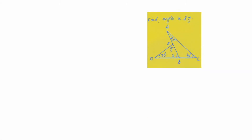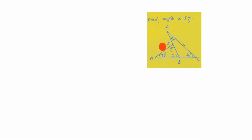Hi friends, welcome to my channel Excellent Ideas in Education. Today we are going to find the angle of x and y — these two values we need to calculate. Two triangles are given. In the first triangle, x and y values are not given and only one value is known, so we can't calculate the other value. We neglect this triangle. In the second triangle, two values are given — 25° and 40° — and only one value is unknown, so we consider this triangle.